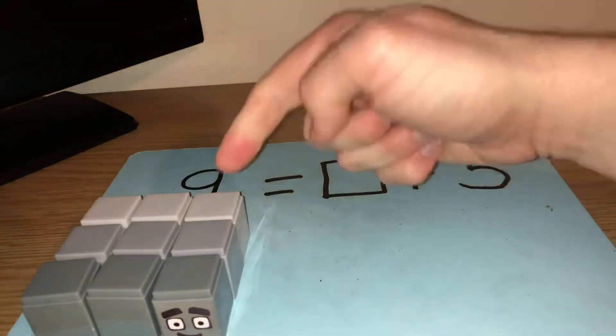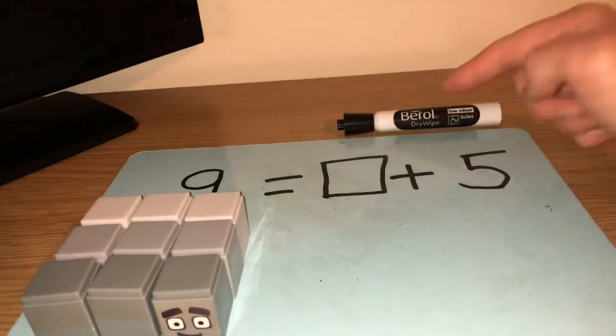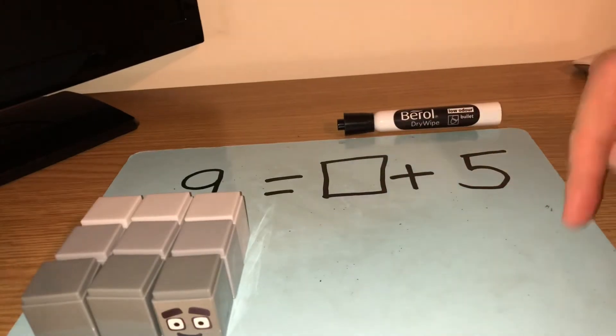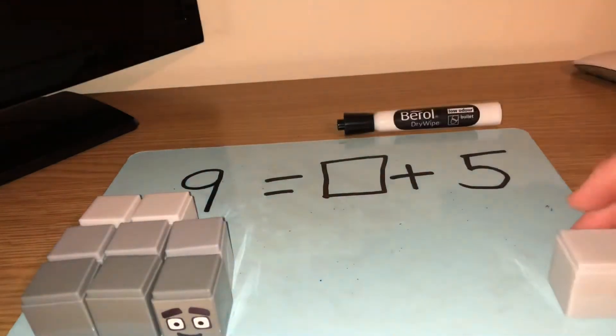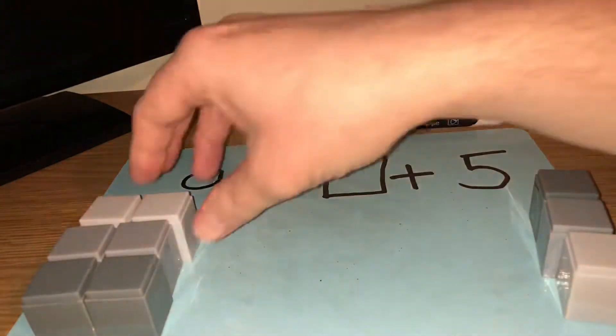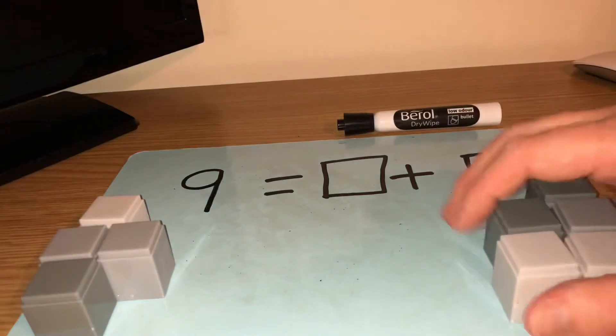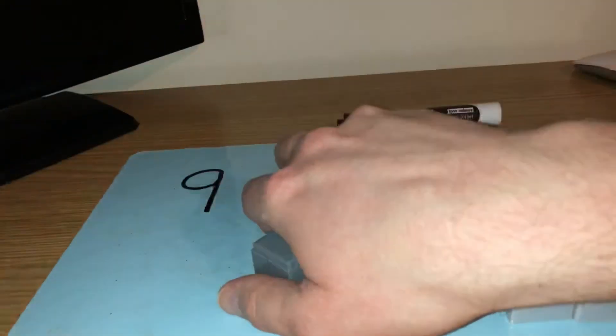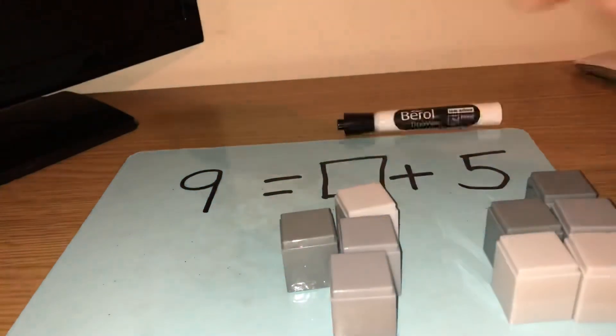Now I need to think about, so what is it that makes 9, which number goes with 5? So I'm going to do this. I'm going to put 1, 2, 3, 4, 5. So I've taken 5 from the 9 pile and whatever's left will be the missing number.